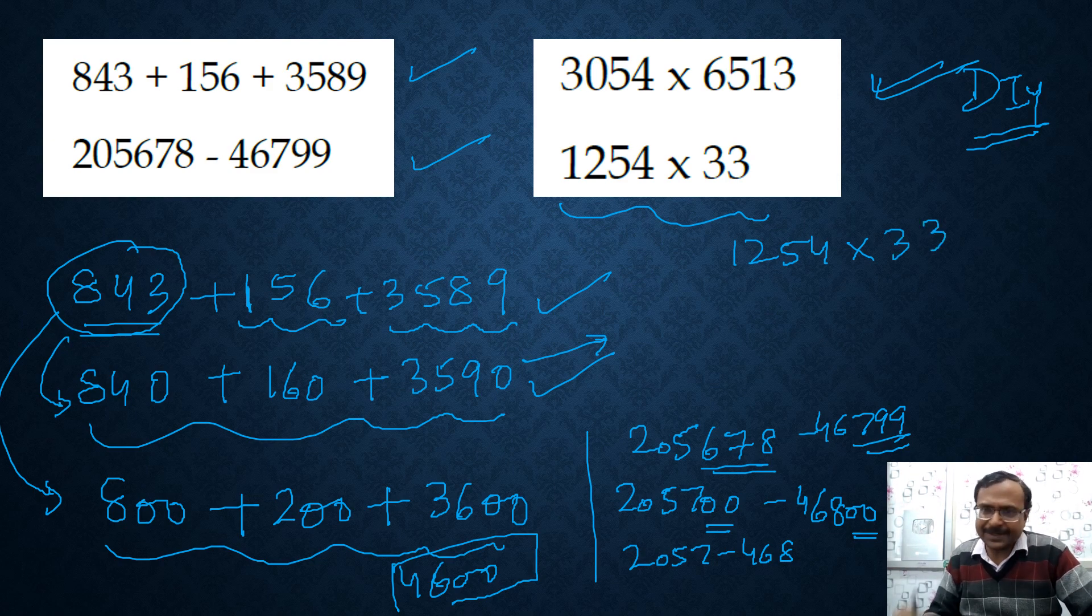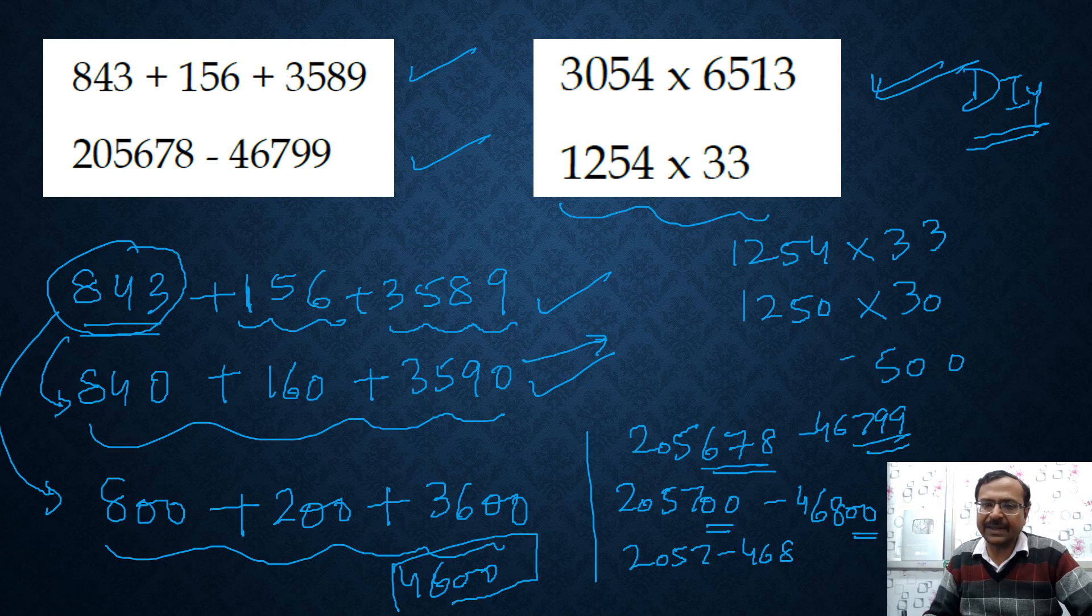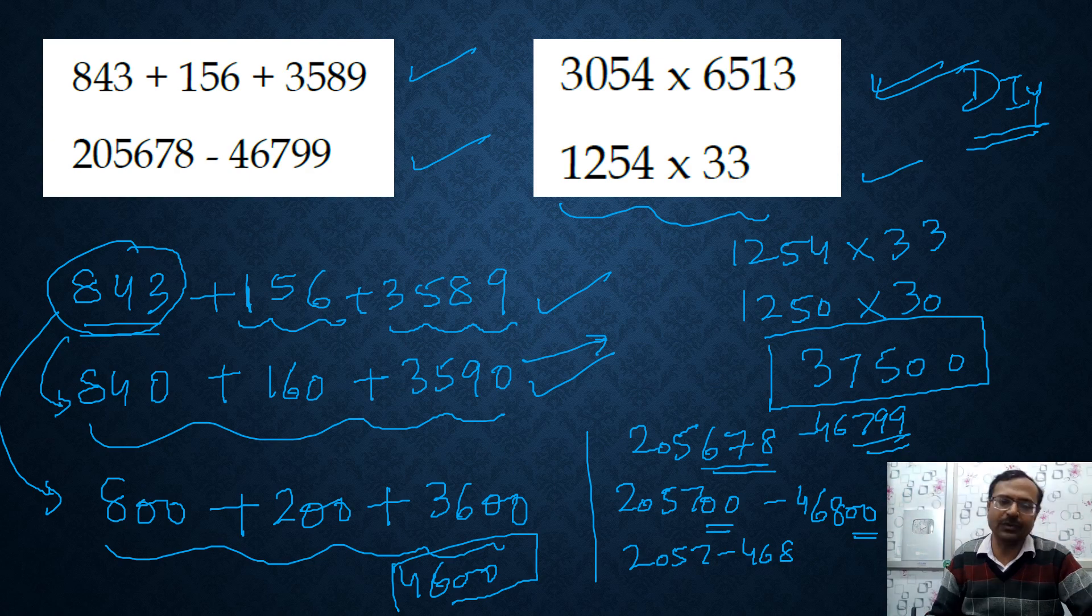So 1254 and 33. If I want to multiply these and get a rough estimate of this, I will round it off to nearest 10. So 1250 and then 33 is 30. So you get two zeros, 5 times 3 is 15, 5, 1 carry. So 7, 3. So here you have the rough estimate of this product. That product will be somewhere around 37,500.